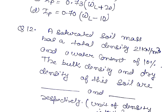Question number 12. A saturated soil mass has a total density 21 kN per meter cube and a water content of 10%. The bulk density and dry density of this soil are respectively, in units of kN per meter cube.